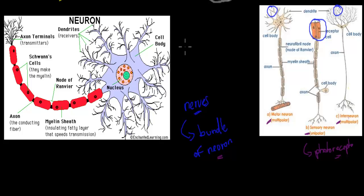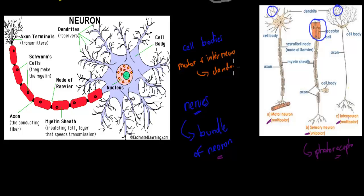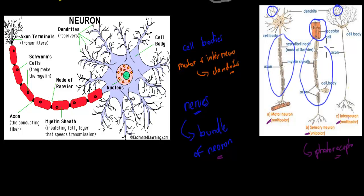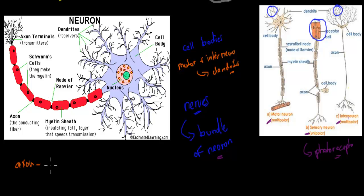So far, they all have cell bodies. The motor neuron and interneuron have plenty of dendrites which connect to different neurons. And they all have an axon, which is this long tail. You can see the axon on the motor neuron, sensory neuron, and interneuron. The axon is that long tail, and it makes sure that the signal can be transmitted from one end to the other.